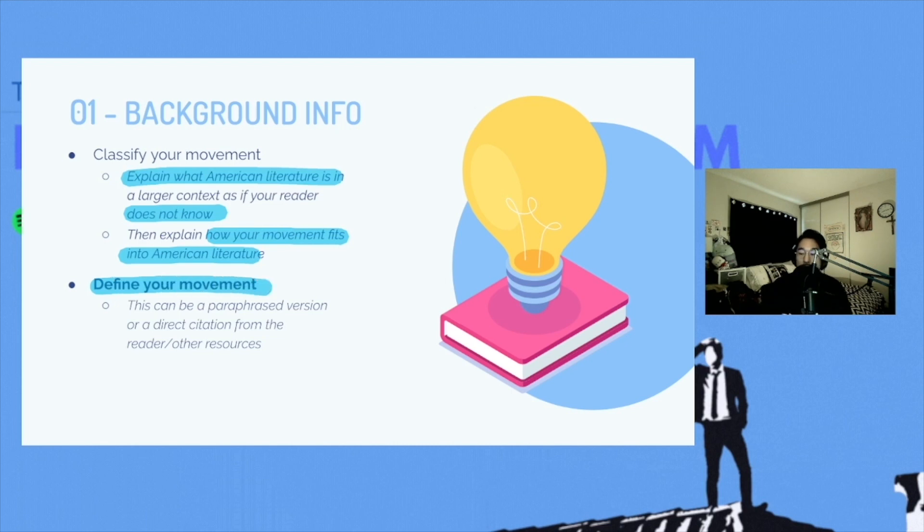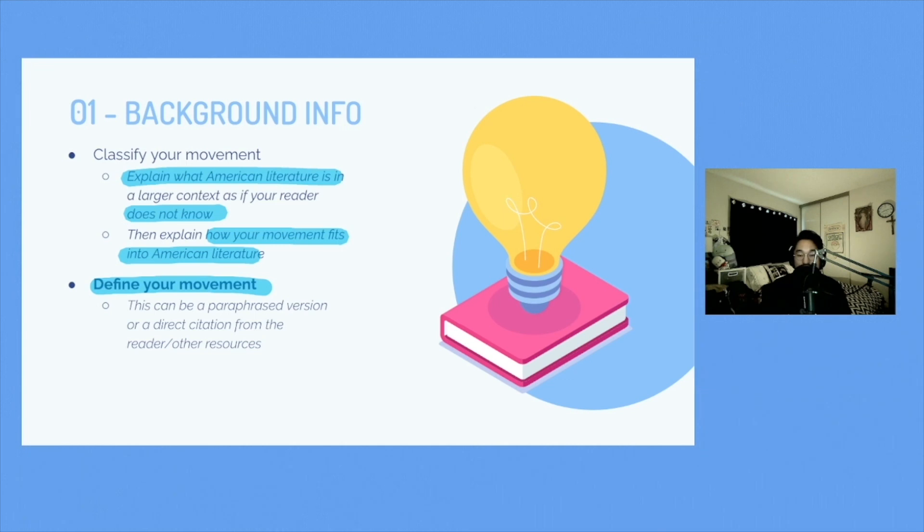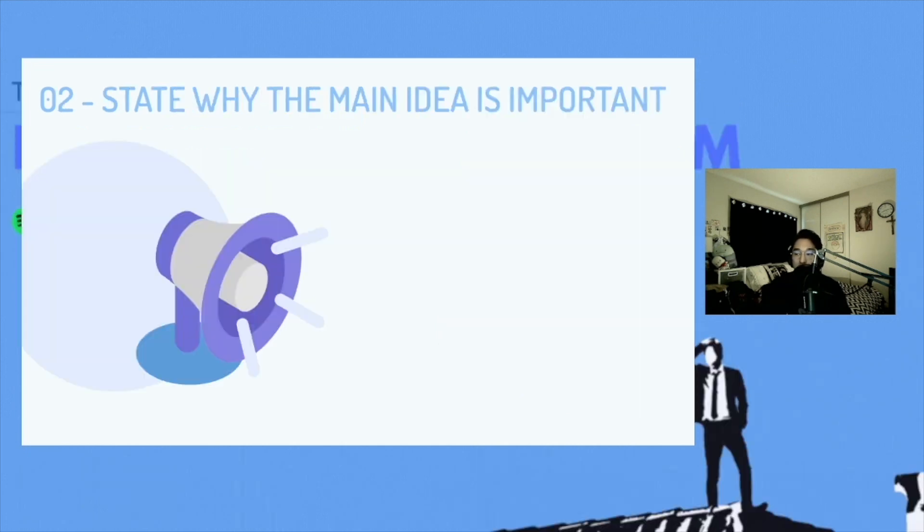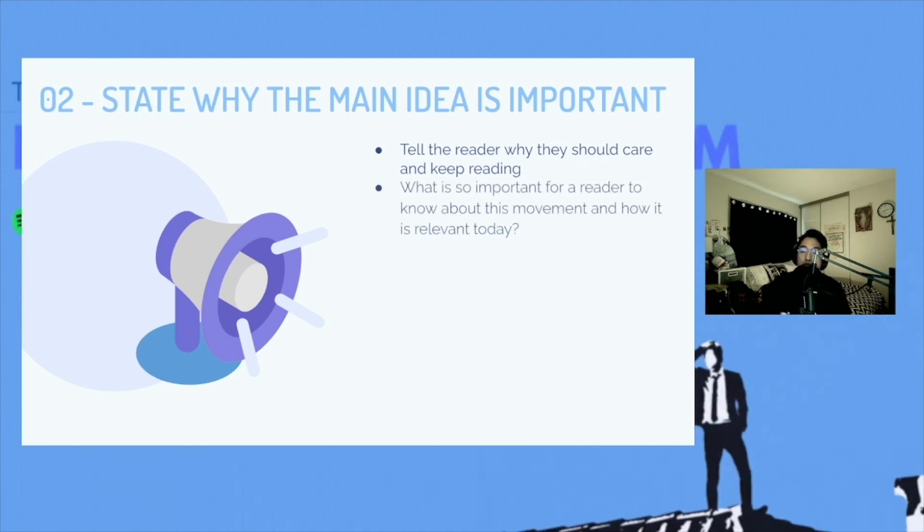Define your movement. This can be a paraphrased version or a direct citation from the reader or other sources. Then you'll want to state why your main idea is important. Tell the reader why they should care and keep reading. Why is it important for a reader to know about this movement and how is it relevant to today?